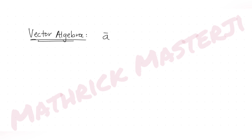Hi guys, I hope you are all doing well. Today's question is from the topic of vector algebra. The question tells us: let a and b be two vectors such that magnitude of a is 1, magnitude of b is 4, and the dot product of a and b is 2.